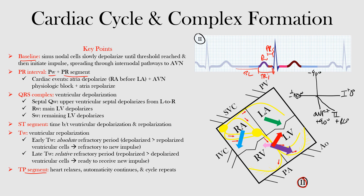Then we have the QRS complex, made up of Q waves, R waves, and S waves — not all of them are always present. The first negative deflection after our P wave is the Q wave. The first positive deflection after the P wave is our R wave. The first negative deflection after the R wave is the S wave. Then we come to the ST segment, which starts at the J point at the end of the QRS complex and goes until the beginning of our T wave. Then we have our T wave representing ventricular repolarization, and finally the TP segment from the end of the T wave to our baseline — usually an isoelectric area.